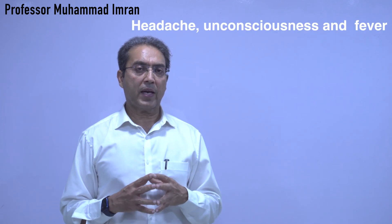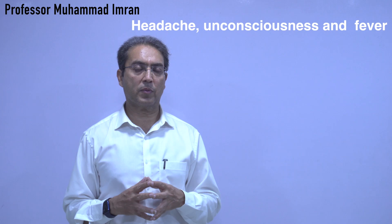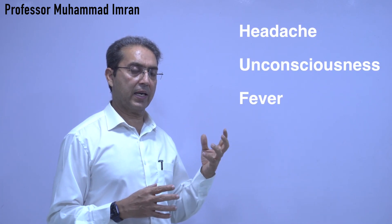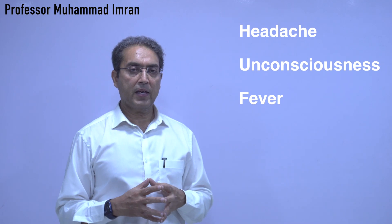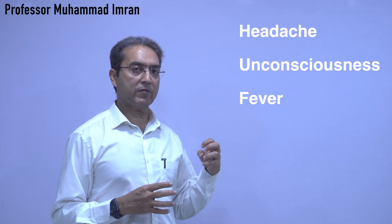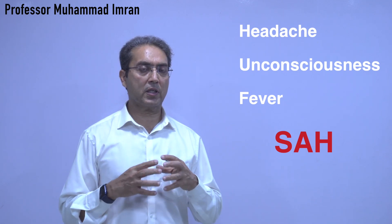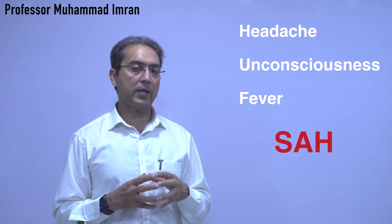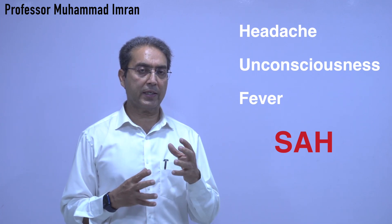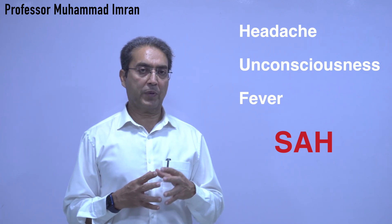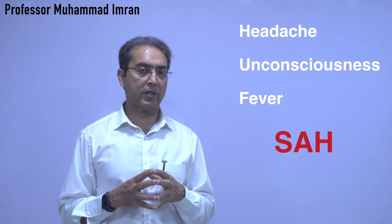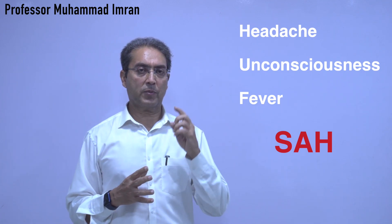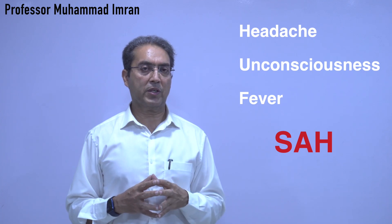Consider three complaints: headache, unconsciousness, and fever. When the patient first develops headache, then becomes unconscious, and later develops fever, this suggests subarachnoid hemorrhage. Subarachnoid hemorrhage starts with sudden onset headache, the patient may become confused or unconscious, and then blood that has leaked into the subarachnoid space disintegrates and can lead to fever — or if the bleeding is close to the thermoregulating centers, fever may come even earlier.